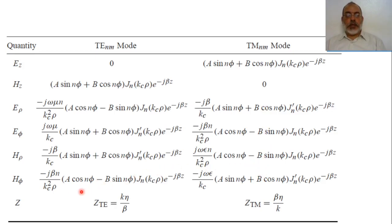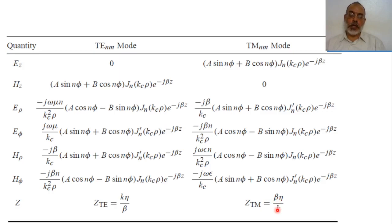The wave impedance for the transverse electric mode is K eta over beta, while the transverse magnetic wave impedance is beta eta over K.